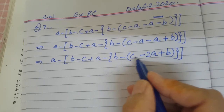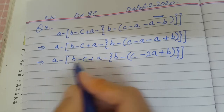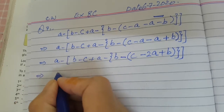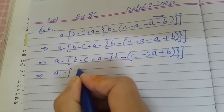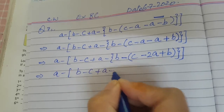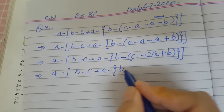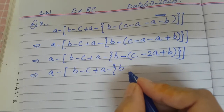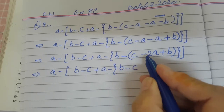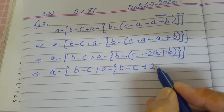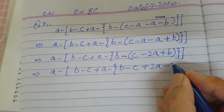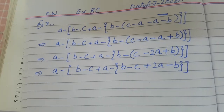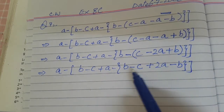Now in the parenthesis we have got all unlike terms — c, a and b — so we will take out all three unlike terms with the outer negative sign. In the next step: a minus square bracket b minus c plus a minus braces. Take out all the terms with this negative sign: plus minus is minus c, minus minus is plus two a, minus plus is minus b. The parentheses are finished.